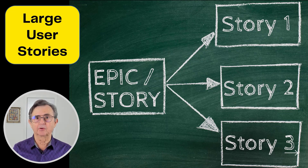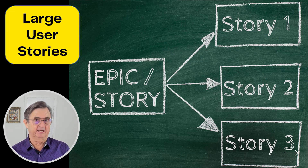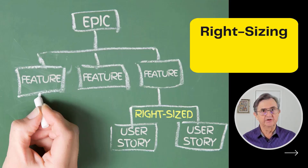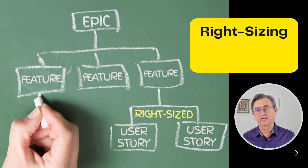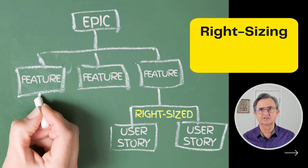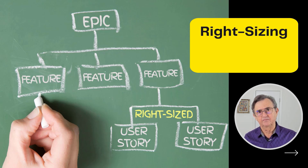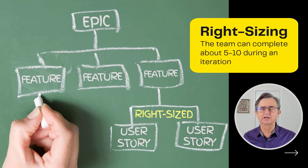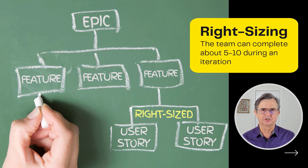Most stories need to be further broken down to enable reliable sprint planning. The desired size depends entirely on factors like the Agile team's experience, the size, the velocity, as well as the iteration length. Ideally, user stories are sized so that the team can complete about 5 to 10 during an iteration.